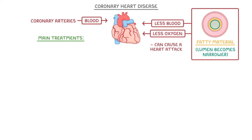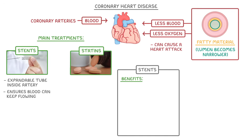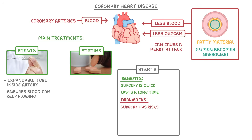The two main treatments for coronary heart disease are stents and statins. A stent is basically an expandable tube that we can place inside the arteries to hold them open, which ensures that the blood can keep flowing. The benefits of stents are that the surgery is relatively quick and they're effective for a long time. The downside though is that they do require surgery, which always has risks.